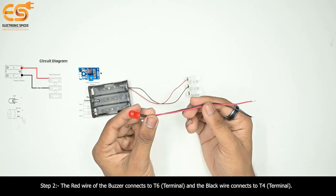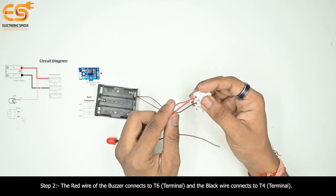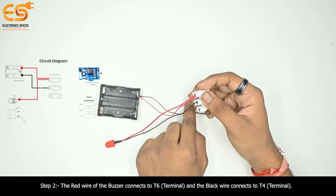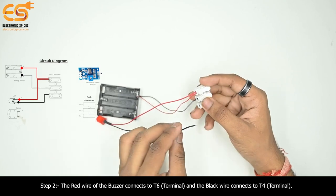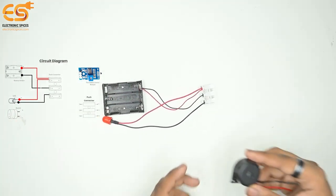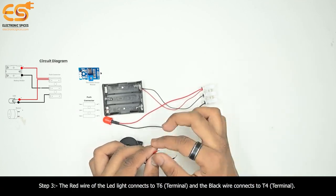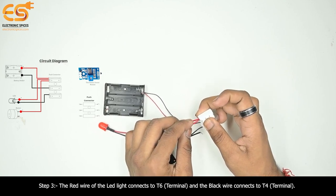Step two: LED light. The red wire of the LED light connects to T6 terminal and the black wire connects to T4 terminal. Step three: buzzer. The red wire of the buzzer connects to T6 terminal and the black wire connects to T4 terminal.